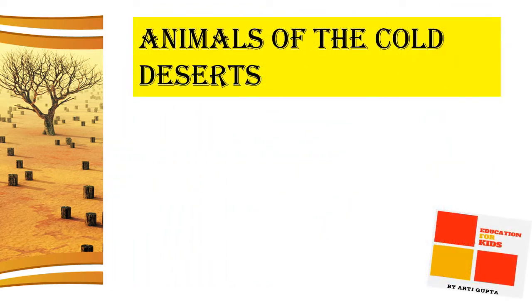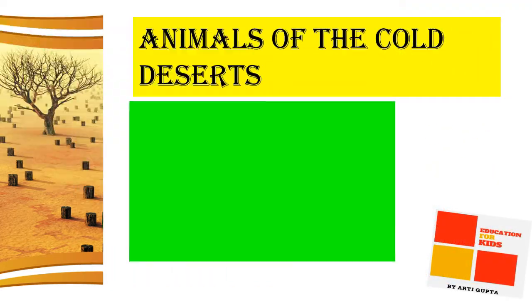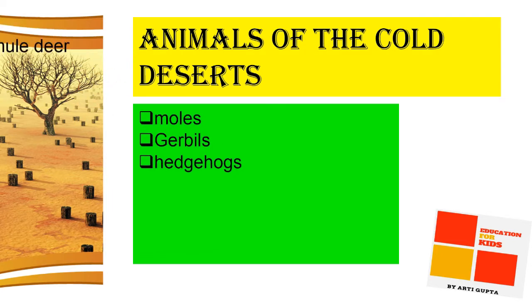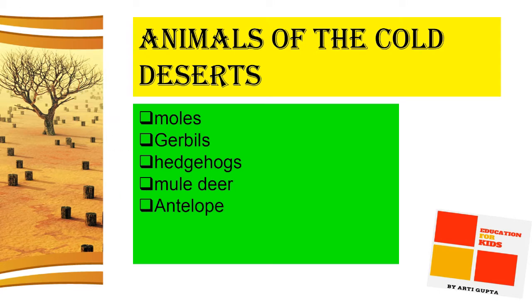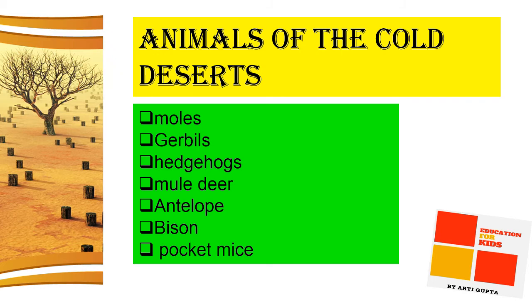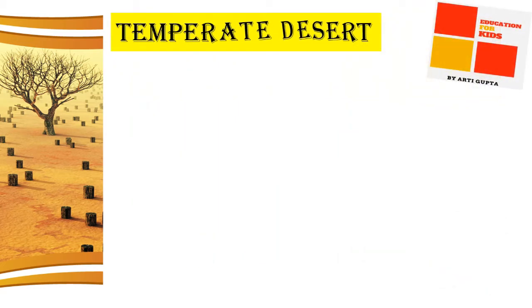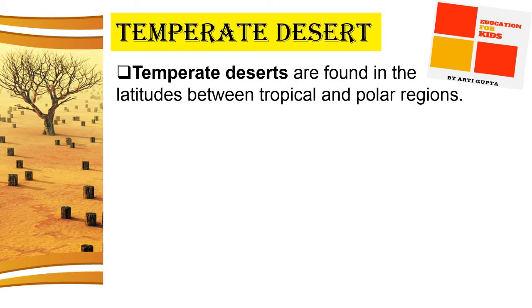Animals found in cold deserts include moles, gerbils, hedgehogs, mule deer, antelope, and pocket mice.